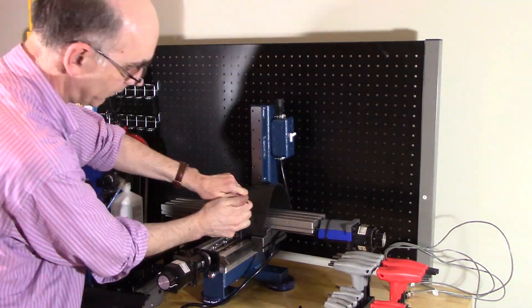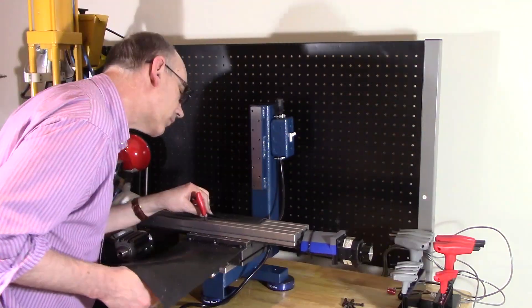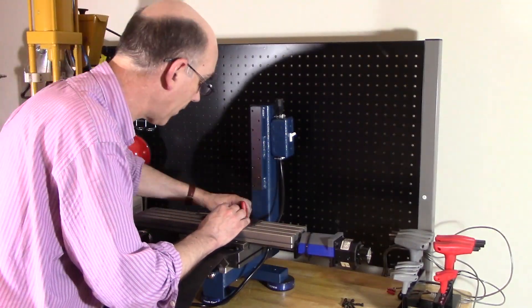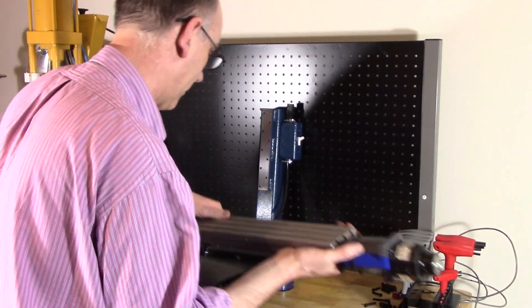The Y axis also has a set of screws, and again you have to move the Y axis back and forth to be able to pull the screws out. Once you do that, it just comes right off.